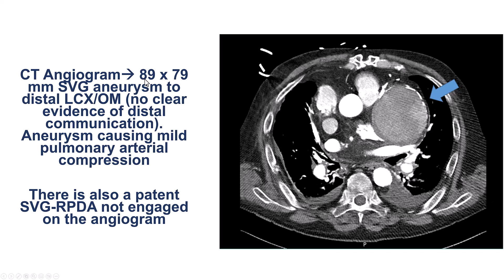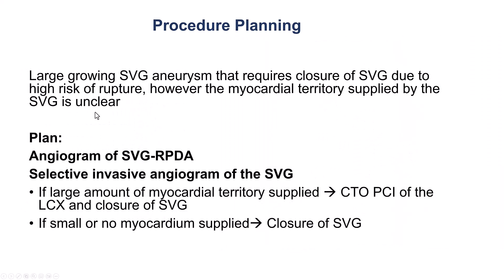It measured 89 by 79 millimeters, and it was not clear whether it was communicating distally. Also, what was found is that there was another graft going to the PDA that had not been injected before. After heart team discussion, the plan was to perform a repeat angiogram, assess the vein graft to the PDA and treat it if needed, and then assess the aneurysmal SVG.